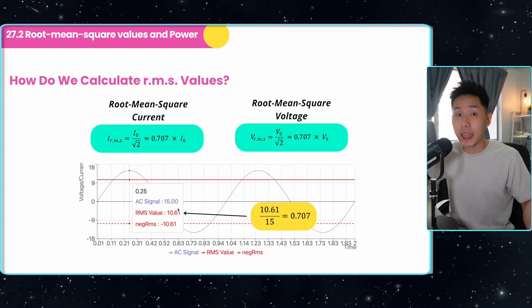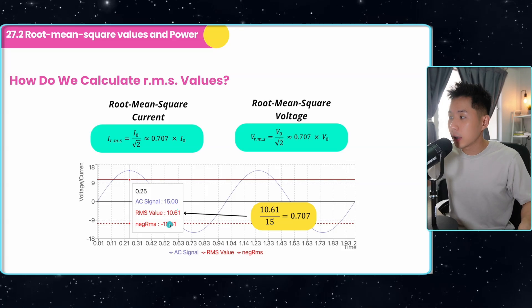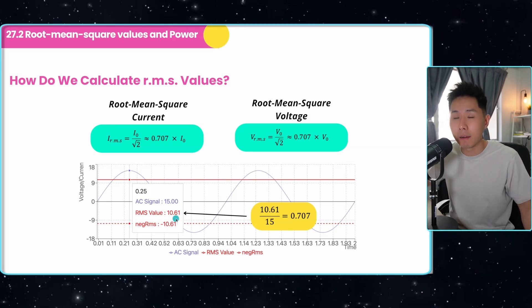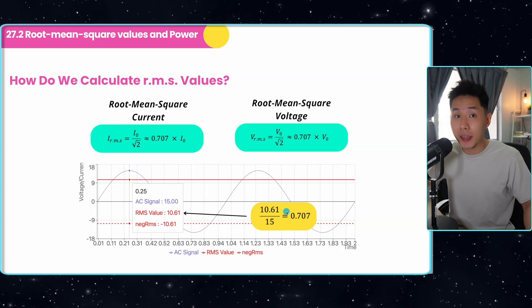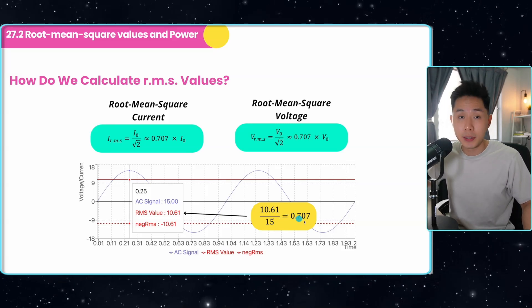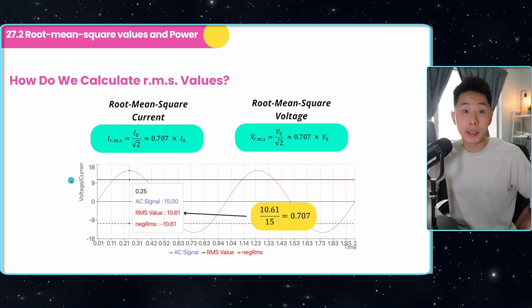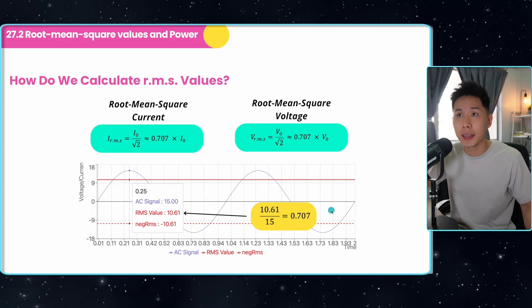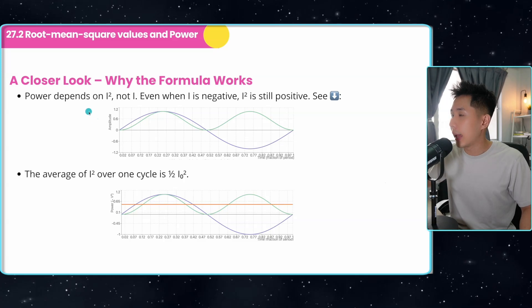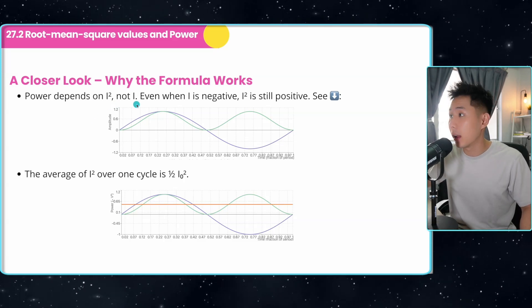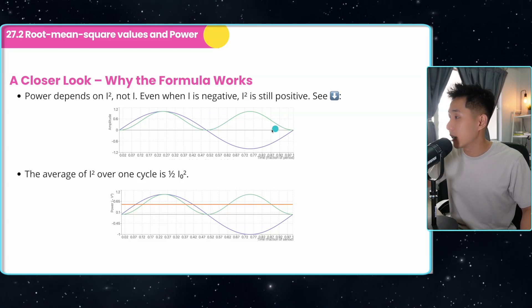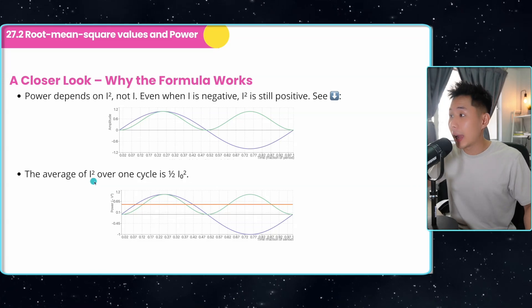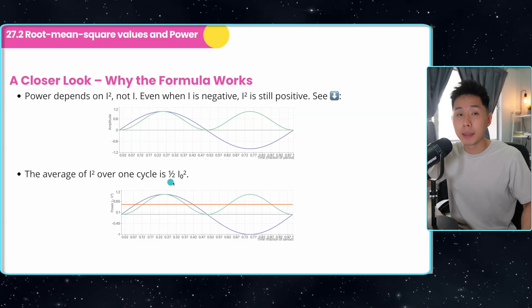So we are saying that if the AC has a peak current of 15 ampere, they are actually equivalent to 10.61 ampere of direct current. And if you were to let the RMS value divided by the peak current, you'll get exactly this amount of percentage. Well, some of you may be worrying about the negative part of it, wouldn't it affect the power, but do note that power depends on I² and not I. So even if the I is negative, it will still be converted to positive when we square it. So the average of I² over one cycle is half the peak current squared.